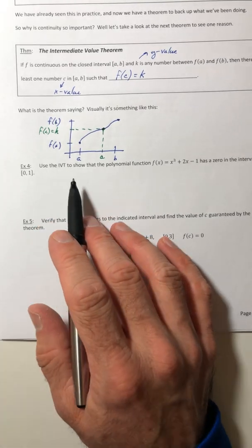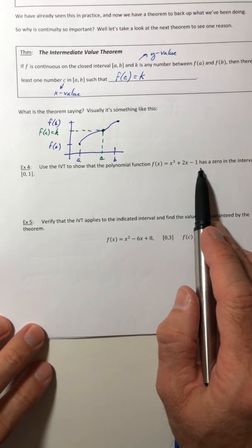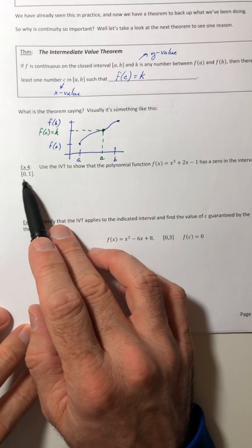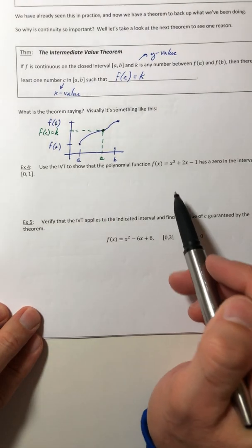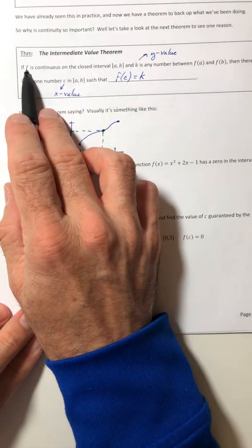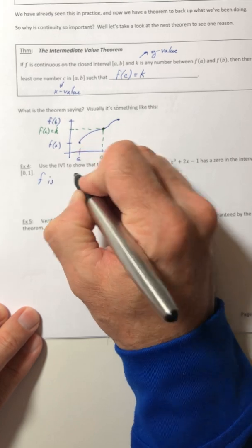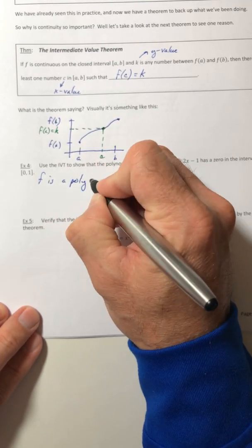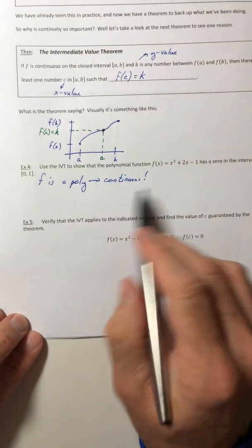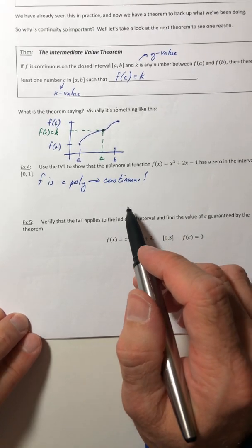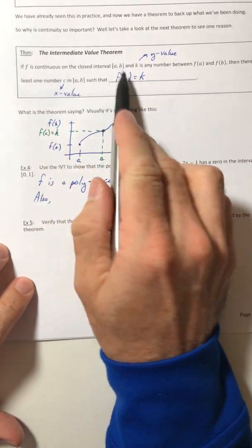Alright, so let's see how to use the theorem. So example four, use the theorem to show that the polynomial has a zero in the interval from zero to one. So first of all, is this function, is it continuous? Because that's what it says it has to be, if it's continuous. Well, f is a polynomial, so that means it's continuous. All polynomials are continuous.